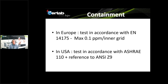To illustrate what is expected from containment: in France, when tested according to the inner grid containment test, you must not find more than 0.1 ppm of SF6 on the inner grid. In ASHRAE 110, you must not find more than 0.05 ppm of SF6 during this test — which is exactly the same requirement as for ducted fume hoods.